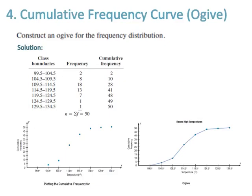Number four is cumulative frequency curve, ogive. Construct an ogive for the frequency distribution. The first cumulative frequency is 2, then add 8 (the second frequency) to get 10, and so on until the last cumulative frequency equals 50. Class boundaries are on the x-axis and cumulative frequency on the y-axis. Plot cumulative frequencies and connect all dots to make the ogive for the upper bound. You can also make an ogive for the lower bound by going from bottom to top.